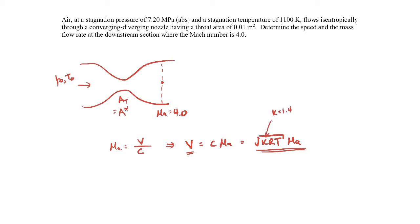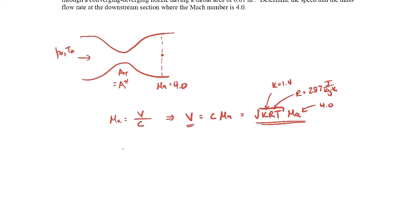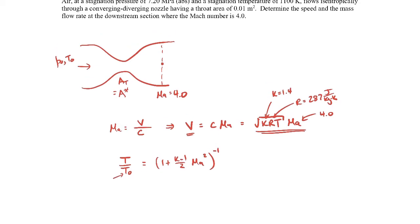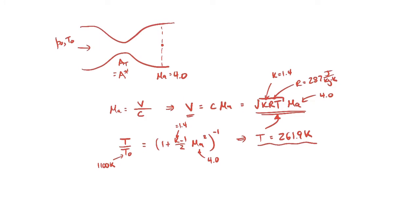The specific heat ratio for air is 1.4, the gas constant for air is 287 J/(kg·K), and the Mach number is given as 4. I need to find the temperature at that location, so I'll use the stagnation temperature ratio T/T₀ as a function of Mach number. T₀ is given as 1100 K, the Mach number is 4, and k is 1.4. Solving for temperature gives T = 261.9 K. Plugging back in, the flow velocity comes out to be 1298 meters per second.